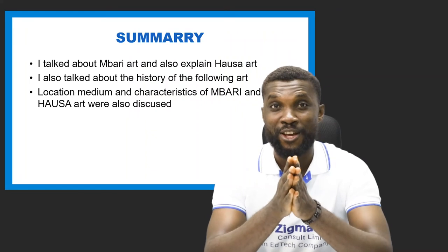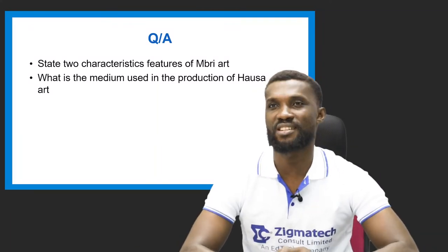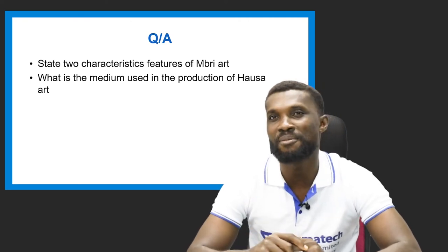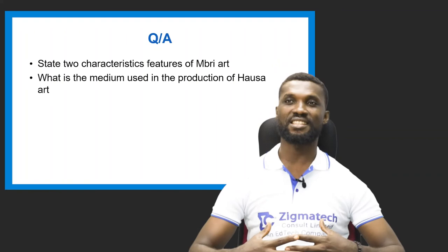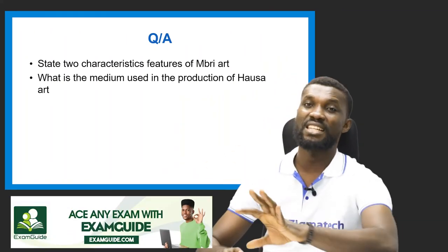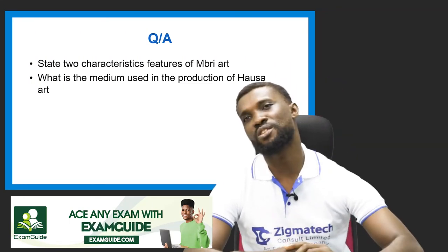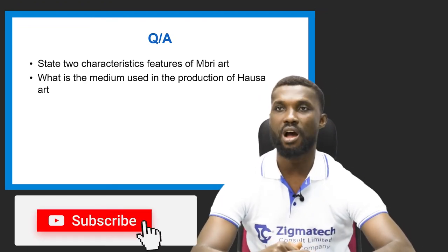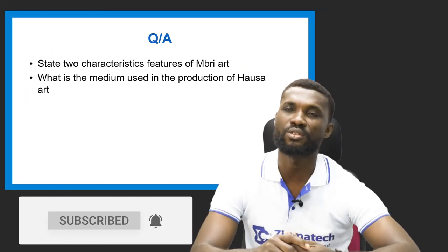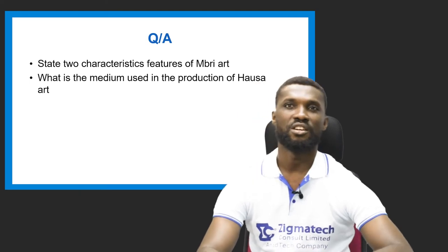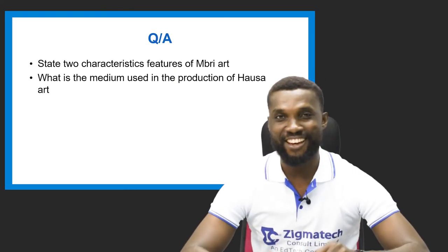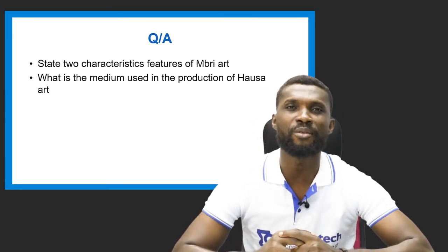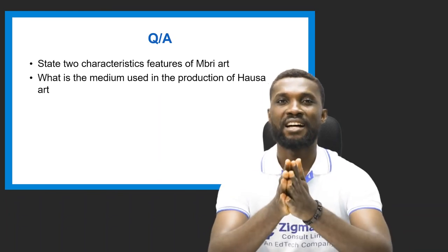Now it's Q&A time. The first question: state two characteristic features of the Mbari art. Their figures are elongated and they have geometric designs painted on the walls. The second question: what are the media used in the production of Hausa art? Calabash, relief on the wall, tie-and-dye — these are the media used for Hausa art. Thank you very much. Now let's dive into the Exam Guide to see what we have there.